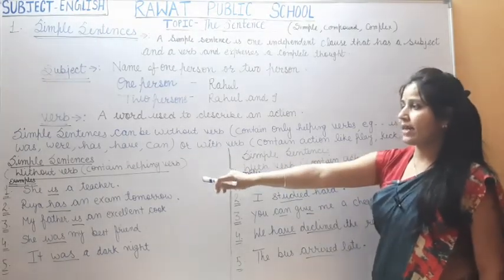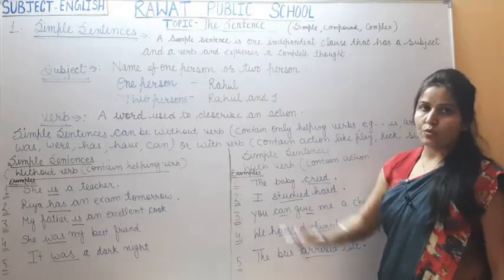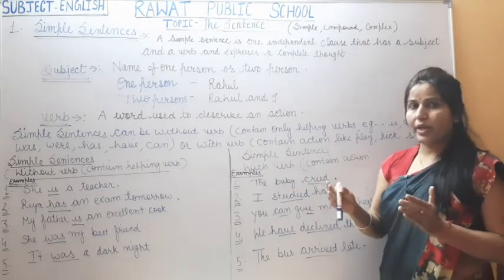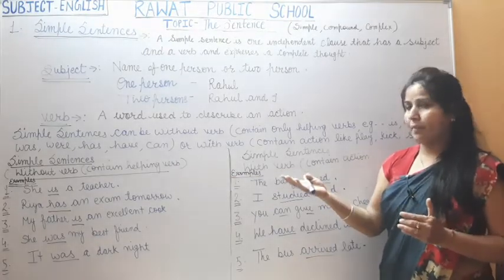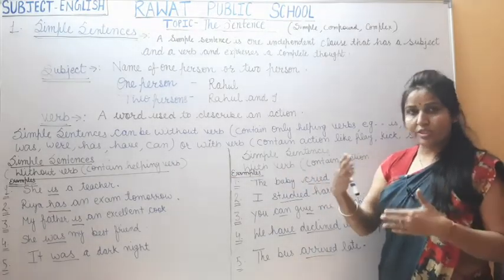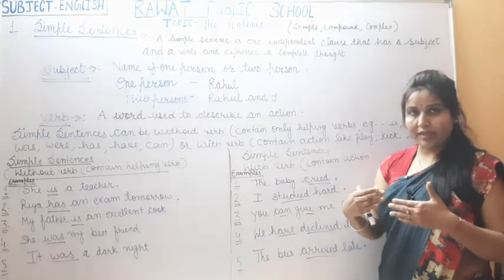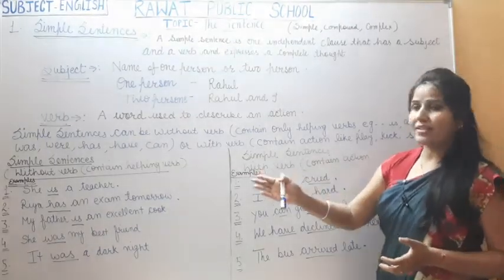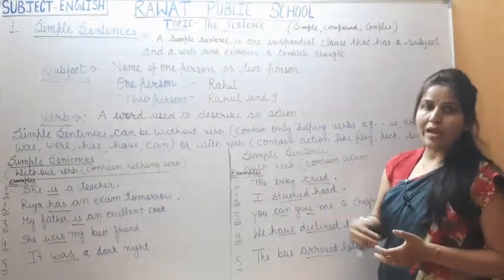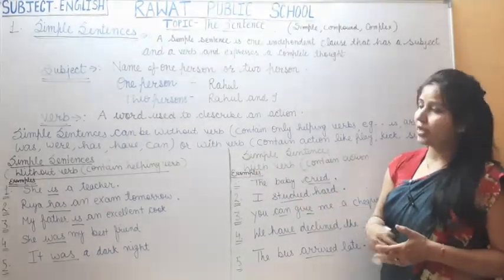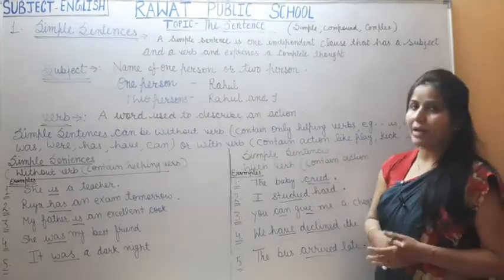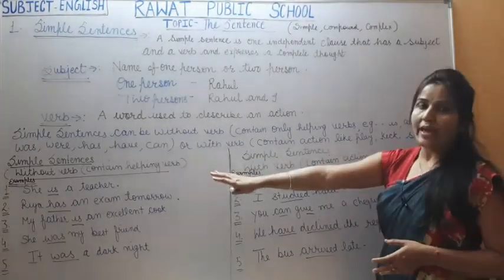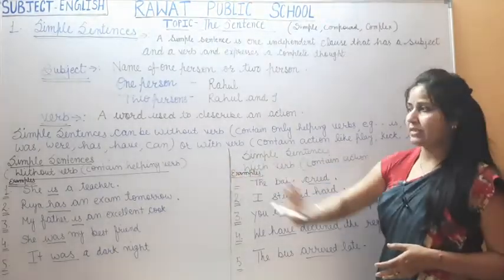Second example: 'Ria has an exam tomorrow.' It means Ria has an exam tomorrow. When someone possesses something, we use 'has'. So has is also a helping verb. There is no main verb in this sentence.